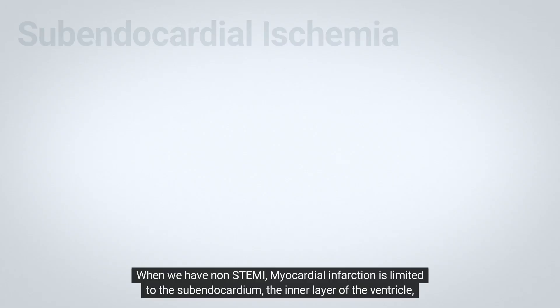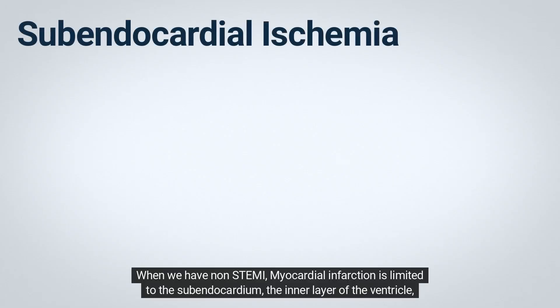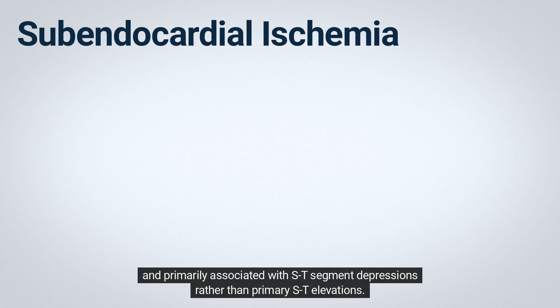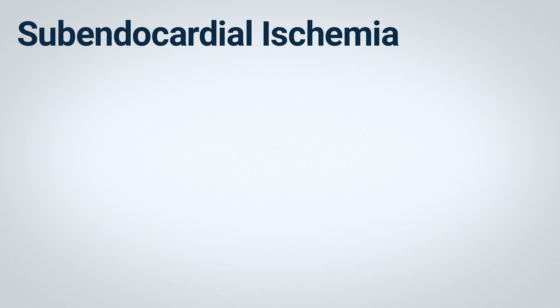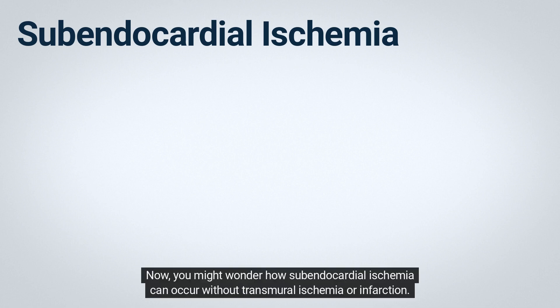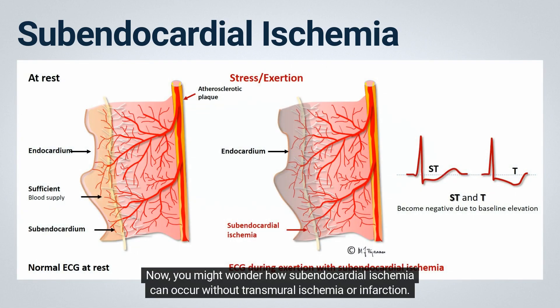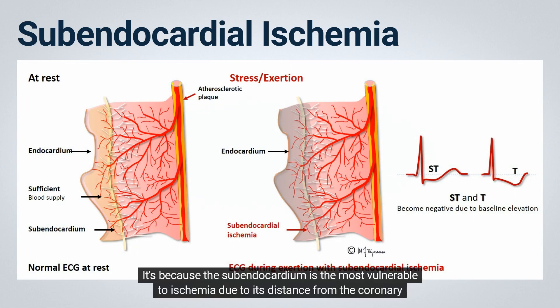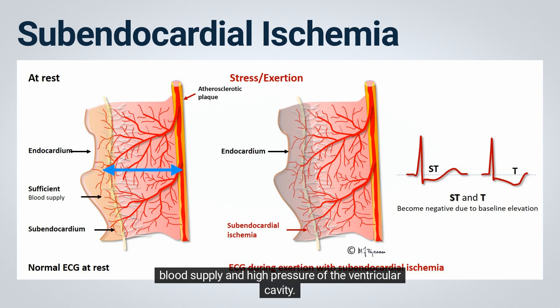In non-STEMI, myocardial infarction is limited to the subendocardium — the inner layer of the ventricle — and is primarily associated with ST-segment depressions rather than primary ST elevations. Subendocardial ischemia can occur without transmural ischemia because the subendocardium is the most vulnerable to ischemia, due to its distance from the coronary blood supply and the high pressure of the ventricular cavity.